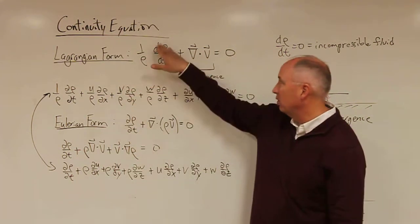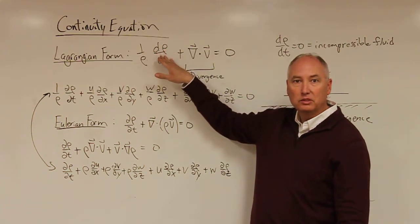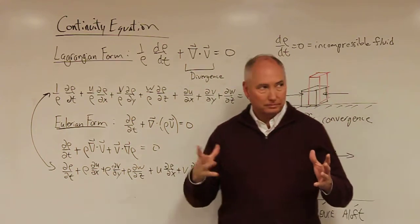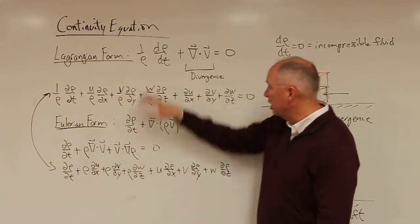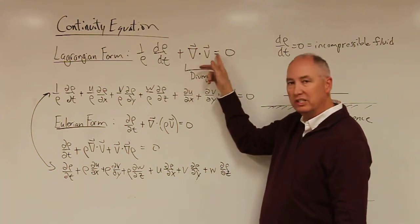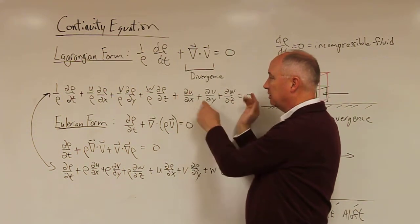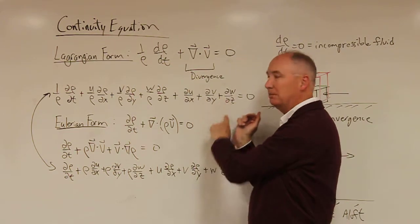If the total time rate of change of the density is equal to zero for the incompressible fluid assumption, then you're left with the divergence is equal to zero. And the divergence is just this partial u over partial x plus partial v over partial y and partial w over partial z.